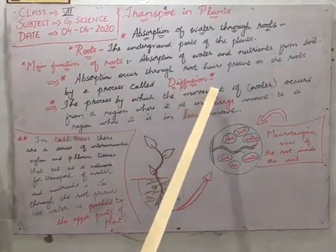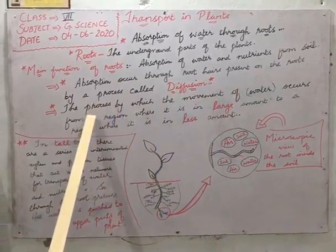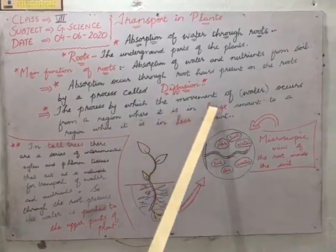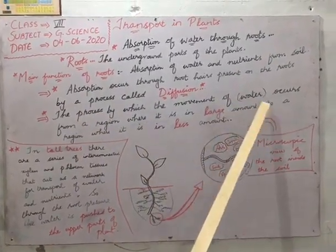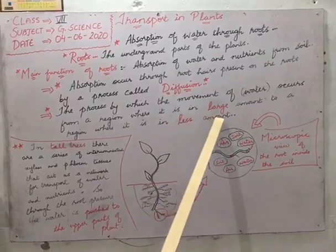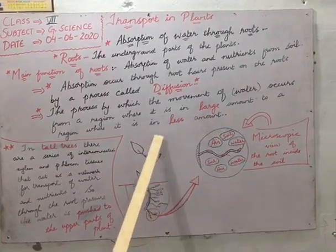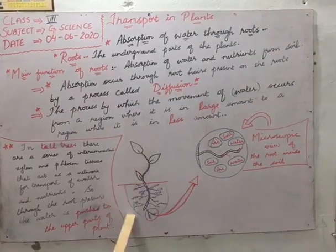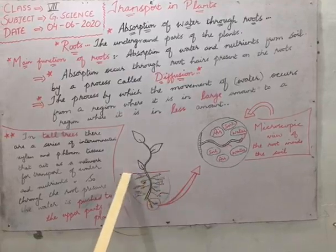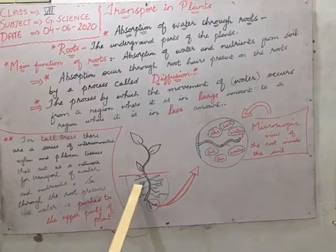The absorption occurs by a process called diffusion. What is meant by diffusion? Diffusion is the process by which the movement of water occurs from a region where it is in large amount to a region where it is in less amount.